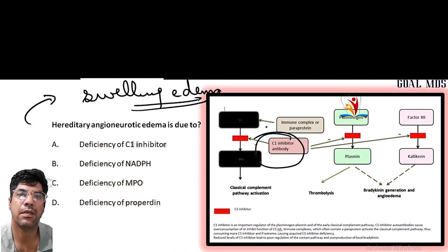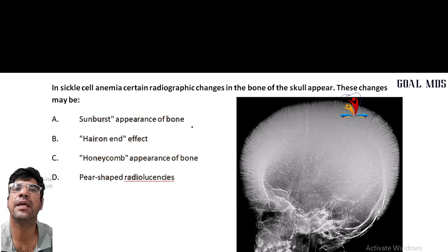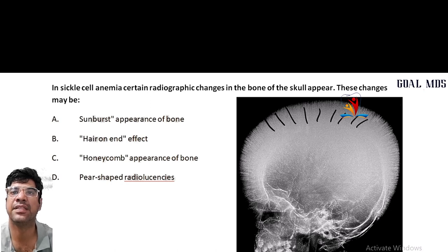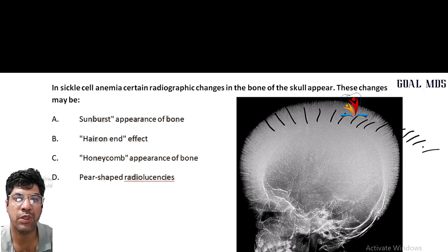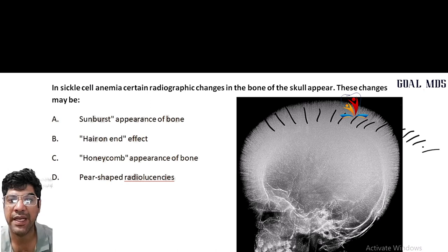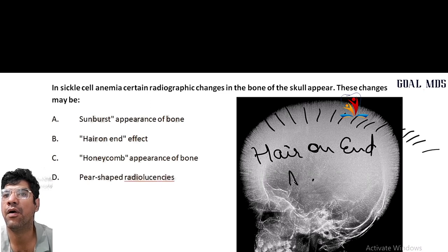In sickle cell anemia, certain radiographic changes in the bones of the skull can occur — the hair-on-end appearance. This results from increased erythropoiesis in the bone marrow, leading to widening of diploë spaces and thinning of the inner and outer tables of the skull, creating a hair-on-end appearance.